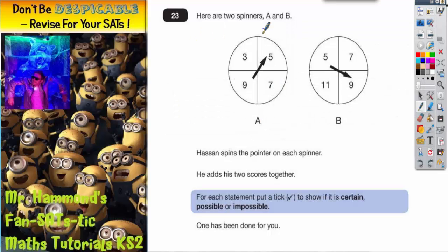Question 23. Here are two spinners A and B. Spinner A has 3, 5, 7, 9. Spinner B has 5, 7, 9, 11.